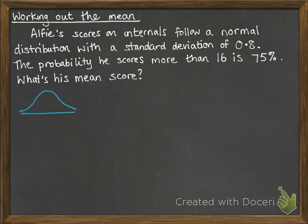So that'll look like this. We've got a normal distribution. The mean we're going to call μ because we don't know what it is. That's the thing that we're going to work out.